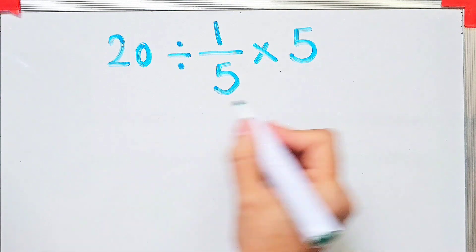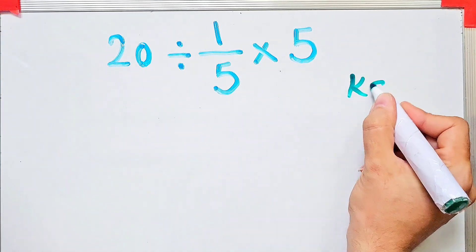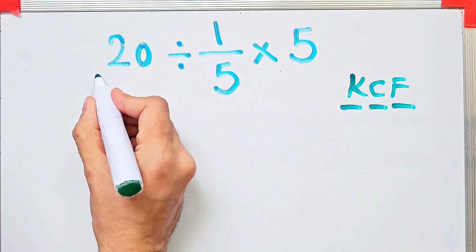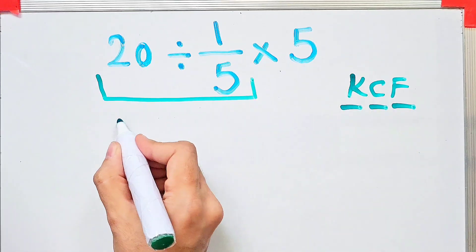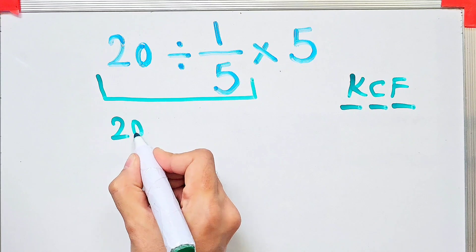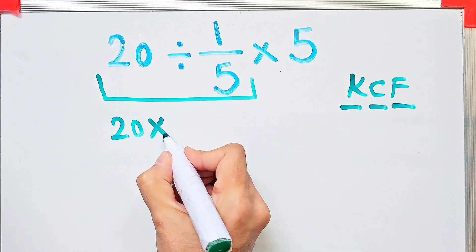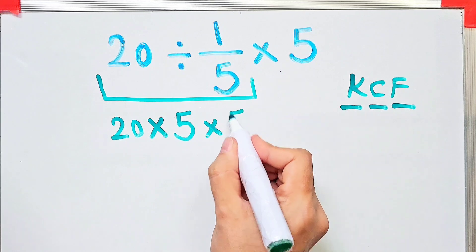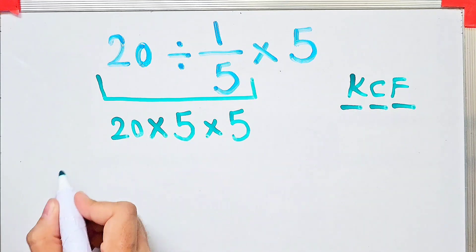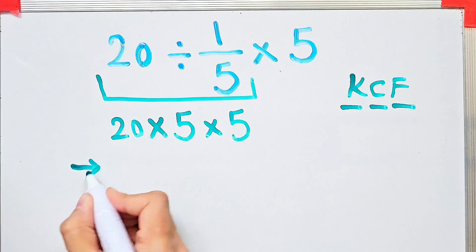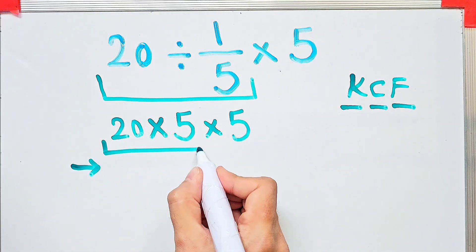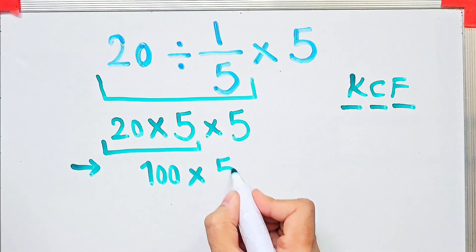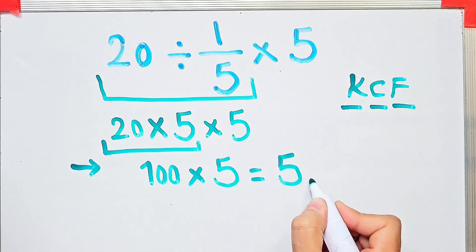Let's solve this step by step. To solve the first part we need to follow the KCF rule: K stands for Keep, C stands for Change, and F stands for Flip. We keep the first number as it is, change the division sign, then flip the second fraction. Now we have a new expression with two multiplications. Starting from the left: 20 times 5 equals 100, and 100 times 5 equals 500 — that's the final answer.